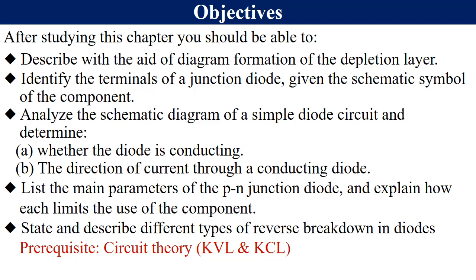You must be able to determine whether the diode is conducting or not, and also determine the direction of current flowing through the diode. Objective number four: you must be able to list the main parameters of a PN junction diode and explain how each limits the use of the component. The last objective: you must be able to state and describe different types of reverse breakdowns in diodes.